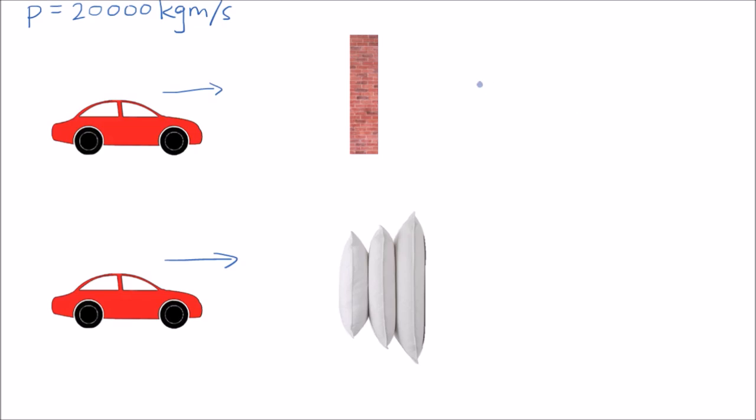So a car with momentum of 20,000 kilogram meters per second hits a wall. And its momentum goes from this to zero. So it ends up as zero when it hits the wall. So this means that there has been a change in momentum, and it was caused by the force exerted by the wall on the car. The change in momentum in this case happened very quickly, and therefore the car experiences a very large force.